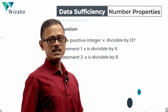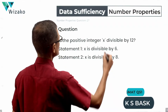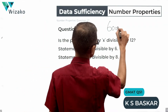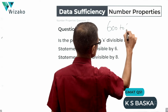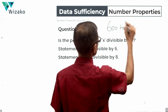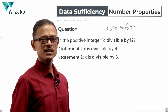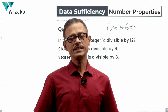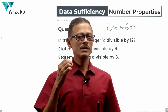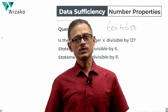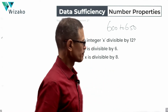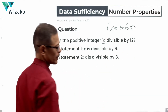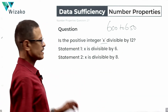This is an easy GMAT data-sufficiency question, classified as a 600 to 650 level question in number properties. The concept tested is divisibility — specifically, divisibility by 12. The question asks: is the positive integer x divisible by 12?